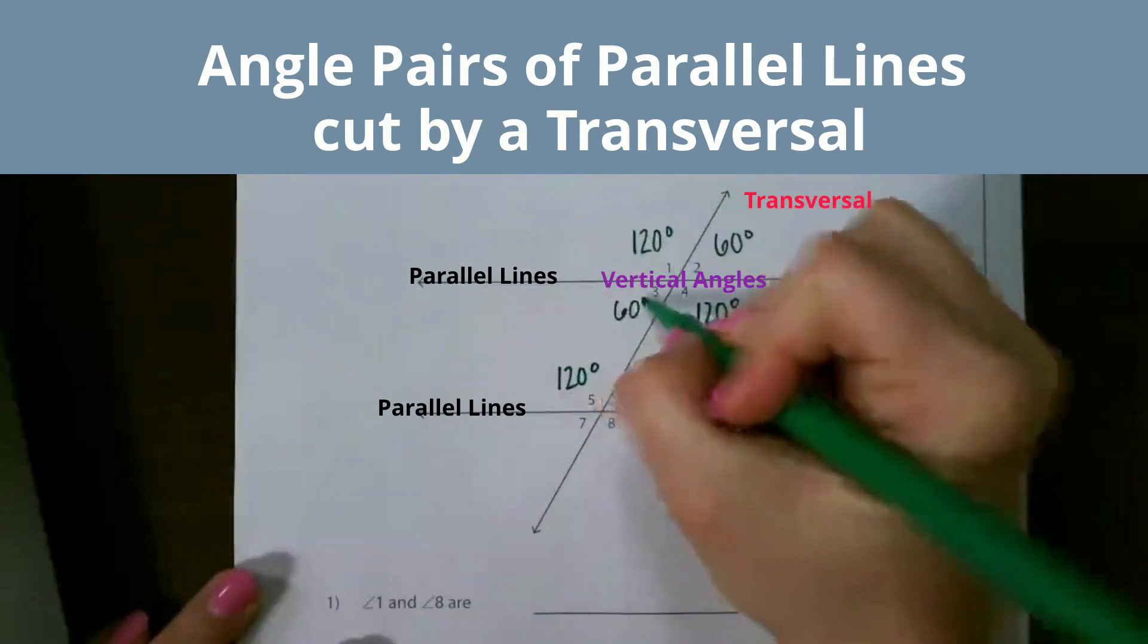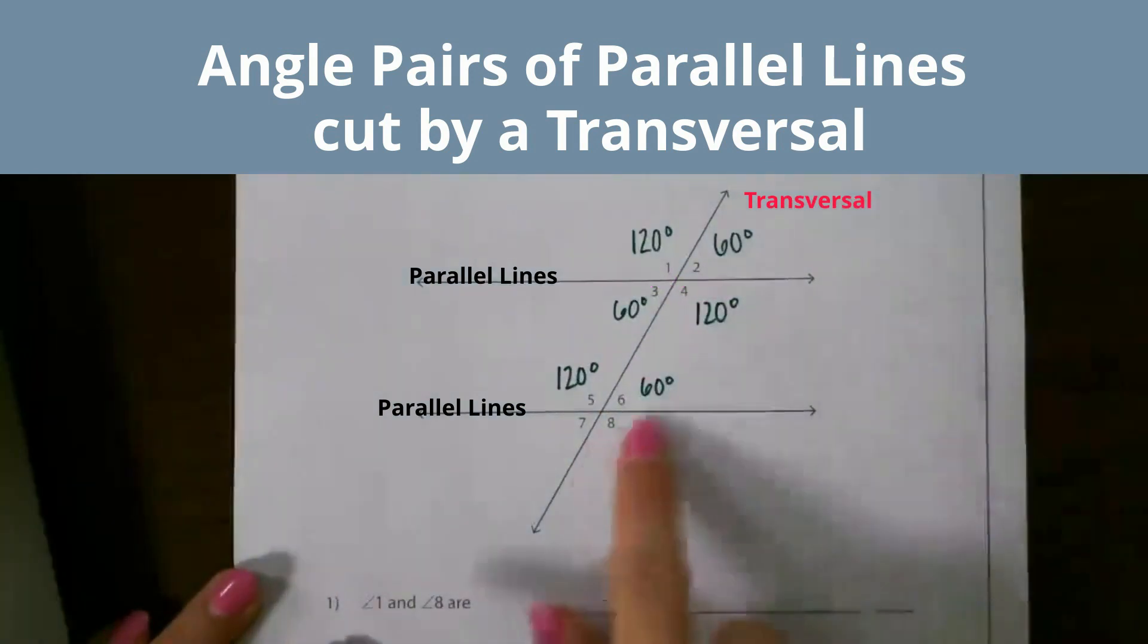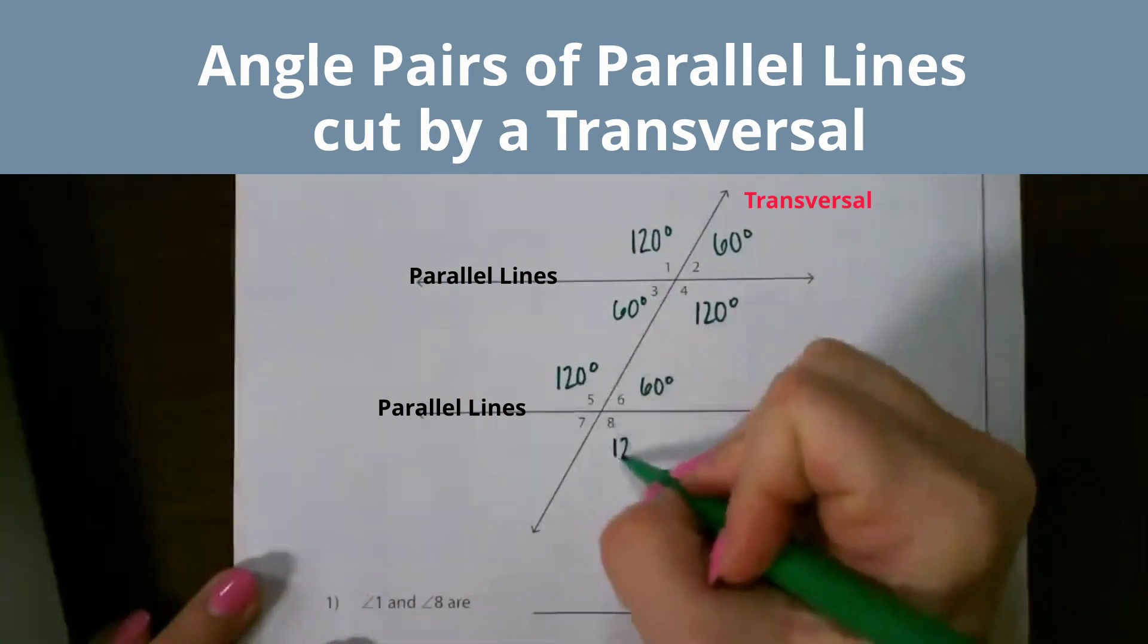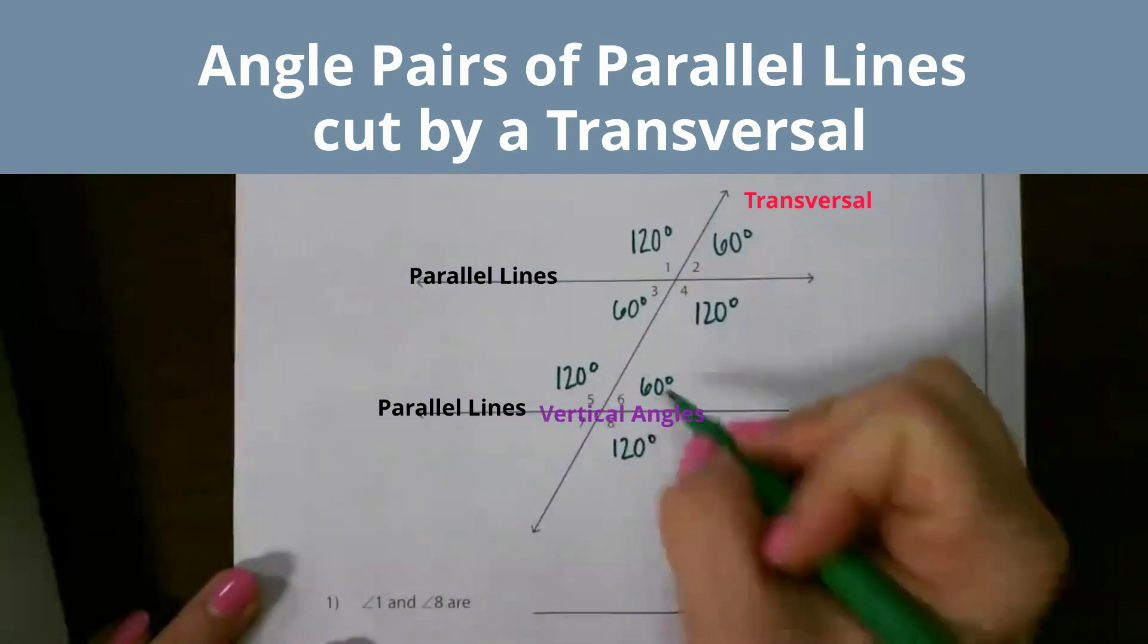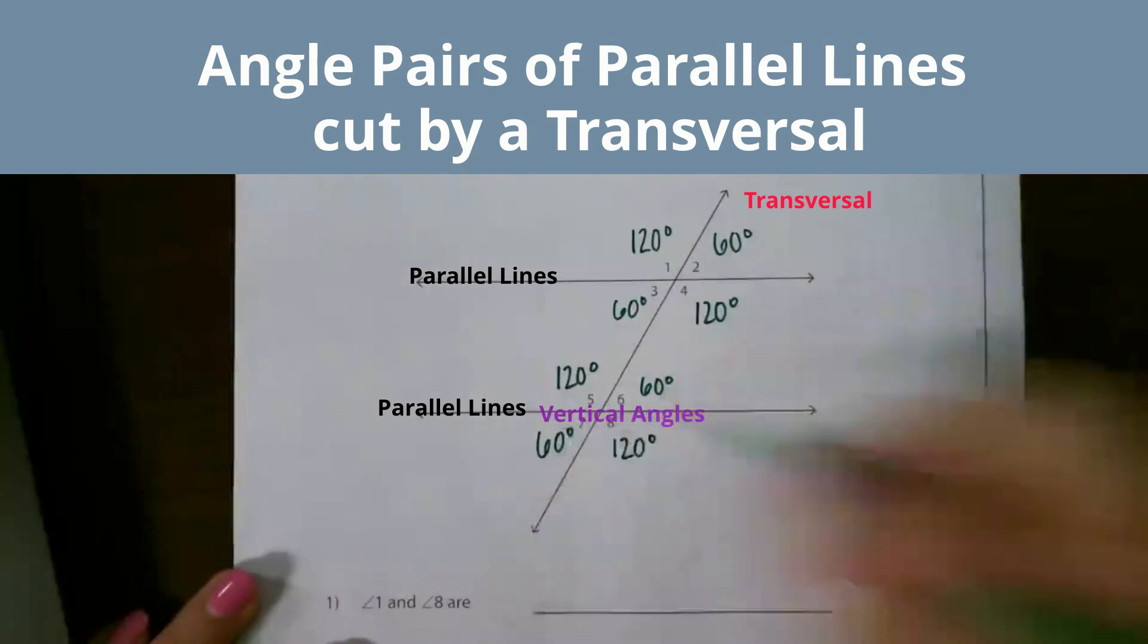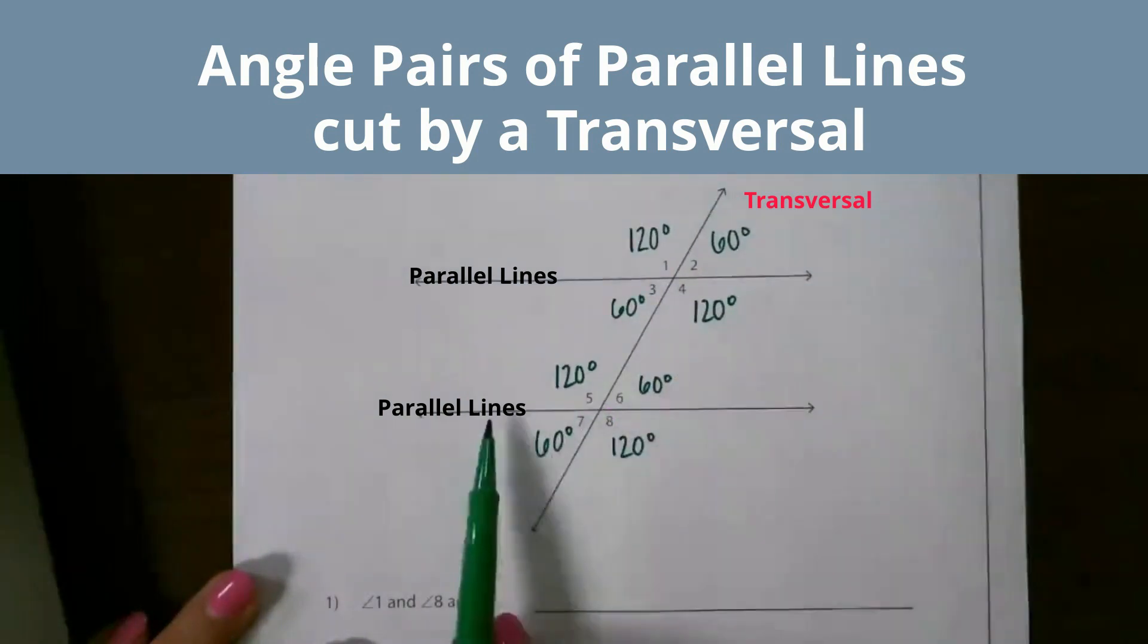Then we can look down here and see if we have any other vertical angles. 5 and 8 are vertical, so they're congruent, as well as 6 and 7. And remember, each straight line that goes across should add up to 180 since they are supplementary angles.